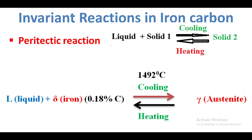Whenever we cool the liquid plus one solid in the iron-carbon diagram peritectic reaction, the liquid L is an iron and carbon alloy mixture. This is the delta iron, that is the delta ferrite. The delta ferrite has 0.18 percentage of carbon, cooling from 1492 degrees Celsius. So liquid plus delta iron at 1492 degrees Celsius gives another solid solution — one liquid plus a solid gives another solid. That reaction is called the peritectic reaction.